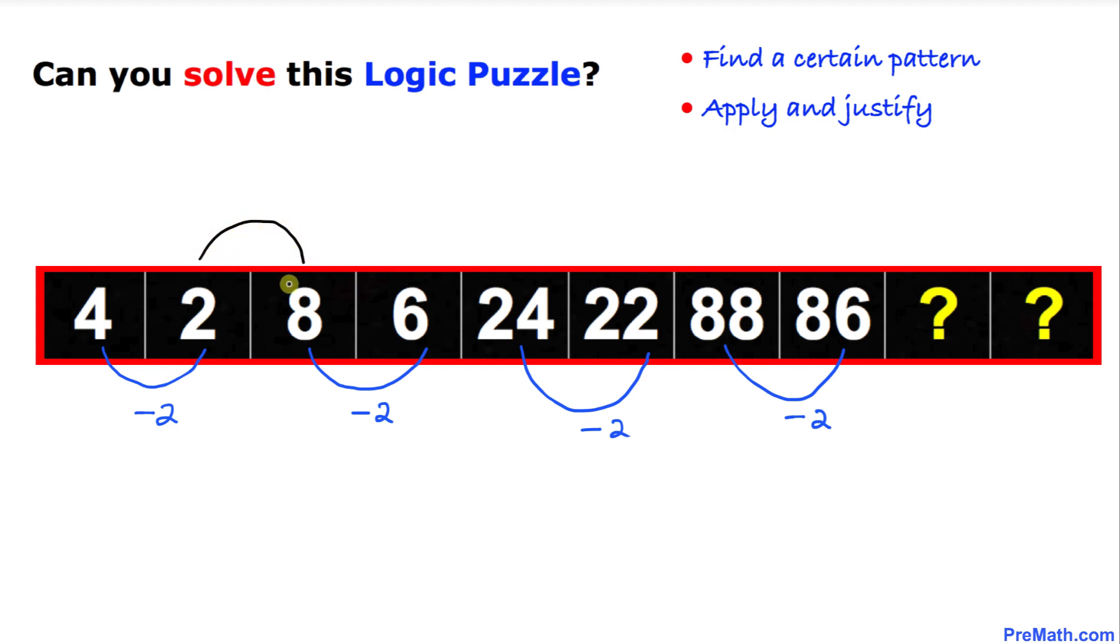Now let's focus on the second and third terms. Between 2 and 8, we can see there's a pattern: we are multiplying by 4. Two times 4 is 8. Likewise, between 6 and 24 we see a pattern of multiplication of 4. And likewise, between 22 and 88 is a pattern of multiplying by 4.